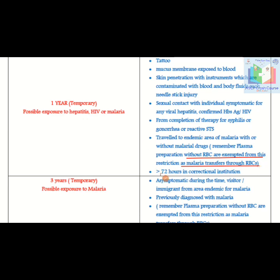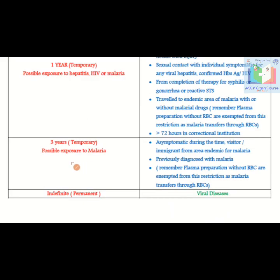Any person confined for more than 72 hours in a correctional institution such as jail is also subject to temporary deferral. A three-year temporary rejection applies for possible exposure to malaria — asymptomatic visitors or immigrants from malaria-endemic areas, or those previously diagnosed with malaria.